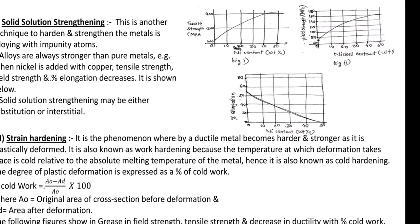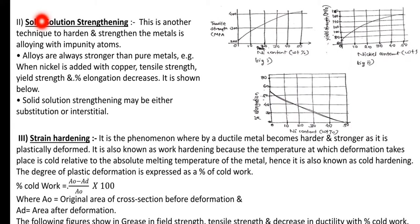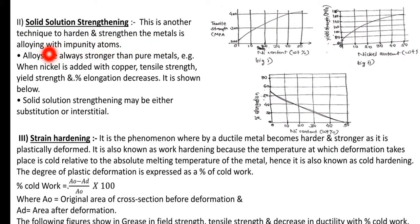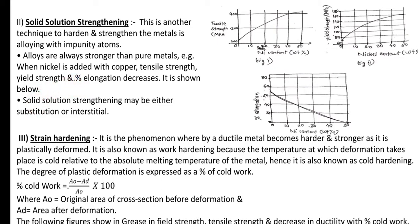Solid solution strengthening is another technique to harden and strengthen metals by alloying with impurity atoms. When we consider a pure metal and add a particular element, it becomes an alloy — for example, adding nickel to copper forms a copper-nickel alloy. The strength of an alloy is much better than the strength of the pure metal.